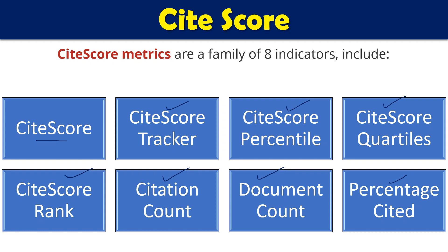CiteScore Tracker provides a current review of how a journal is performing during the course of a year. Since CiteScore is calculated every month, in a year we have 12 CiteScore Tracker data points. CiteScore Percentile indicates how a journal ranks relative to other journals in the same subject field, with the field defined according to Scopus field definitions.